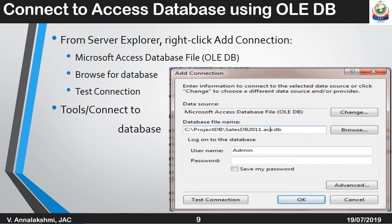To connect an Access database using OLEDB, from the Server Explorer right-click and select Add Connection, then choose Microsoft Access Database File (OLEDB). Browse for the database where the data is available, then choose Test Connection. Once all the details are finished, the test connection will indicate it has succeeded. Then go to Tools or Connect to Database.